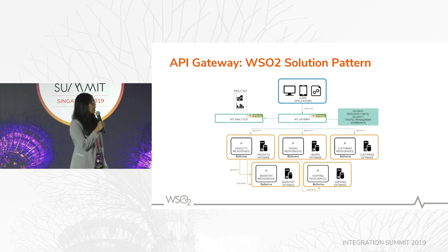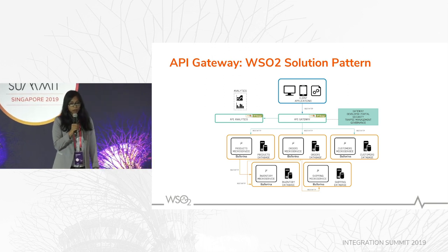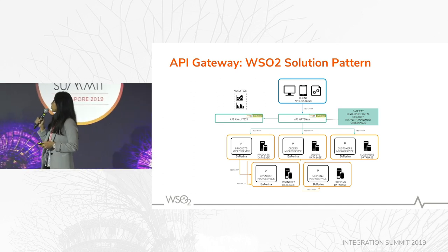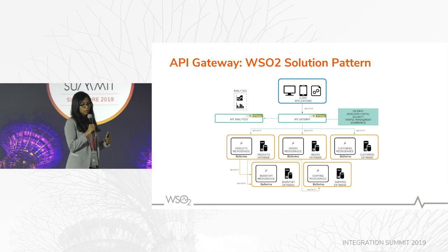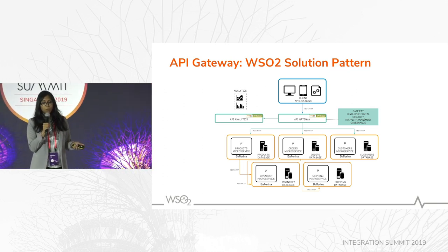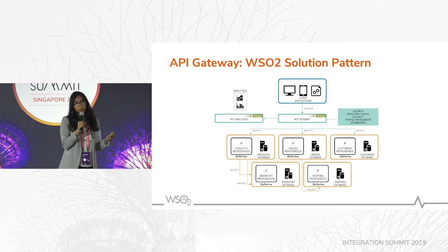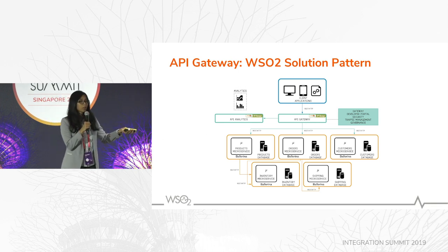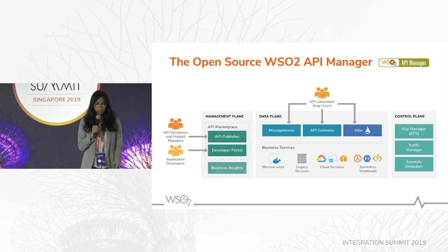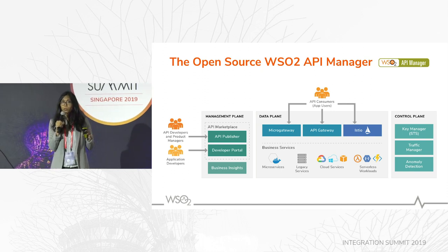An API gateway is usually part of an API management solution. Here you can see the WSO2 API Manager's gateway mapped in this picture. The API gateway comes as part of the entire API management solution, which also consists of components like developer portals, key manager (the security component), the traffic management component, and other components. All of these can be deployed in a single runtime or as separate runtimes depending on your use case and load requirements. The API analytics component is always deployed separately. This is the kind of API ecosystem you can create with the components of the WSO2 API Manager.